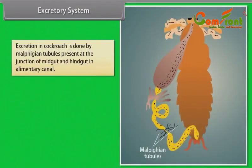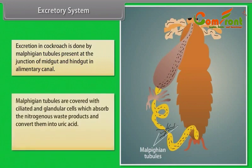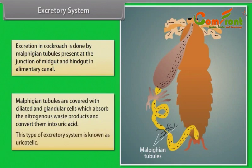Excretory System: Excretion in cockroach is done by Malpighian tubules, present at the junction of midgut and hindgut. The Malpighian tubules are covered with ciliated and glandular cells which absorb nitrogenous waste products and convert them into uric acid. This type of excretory system is known as uricotelic.